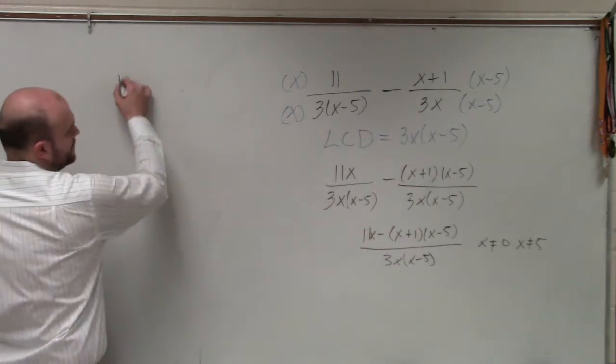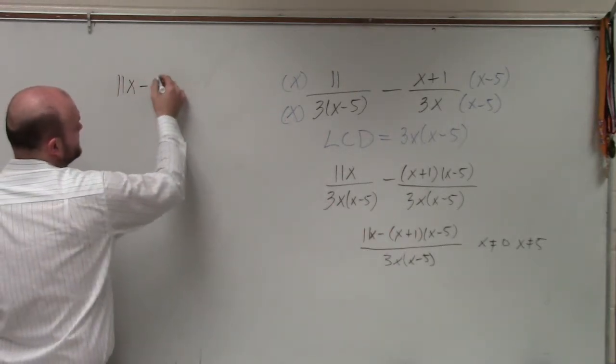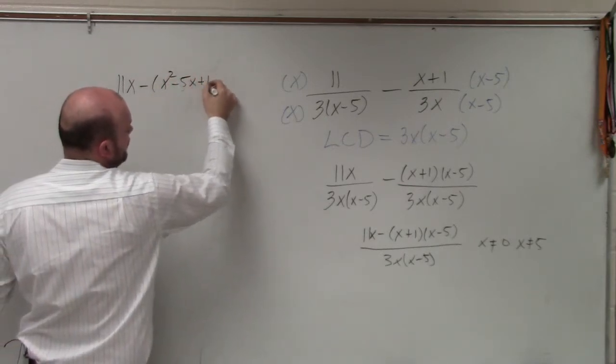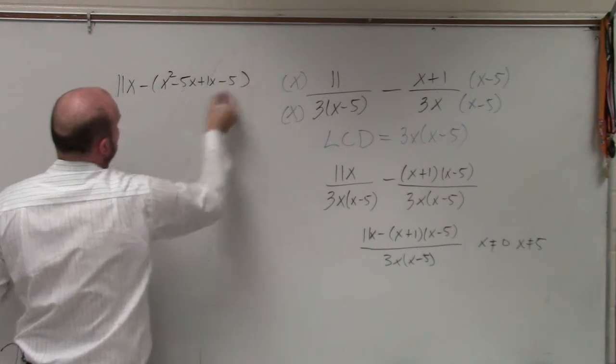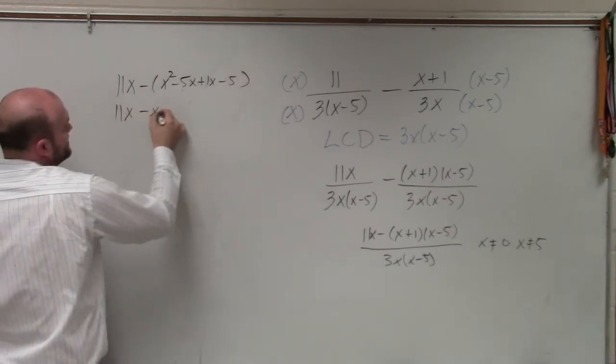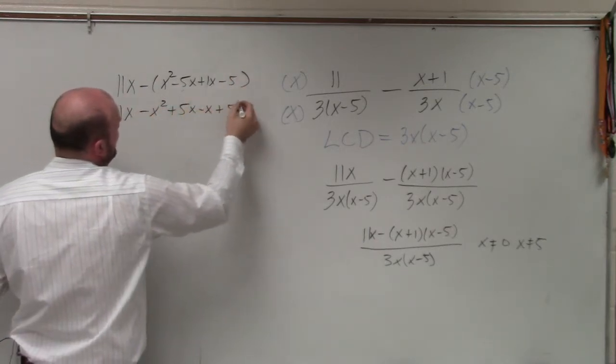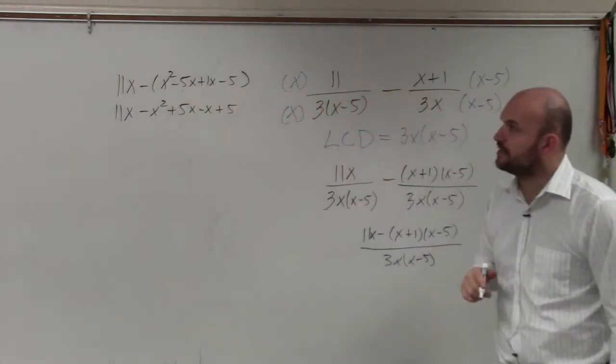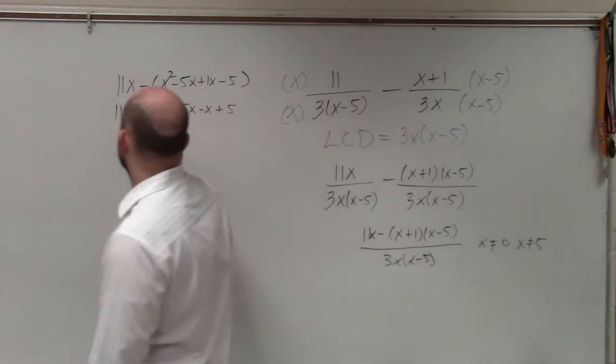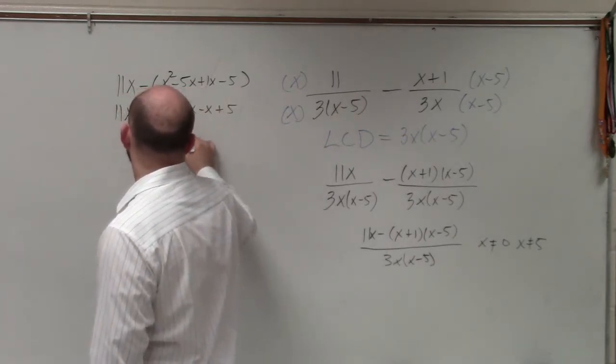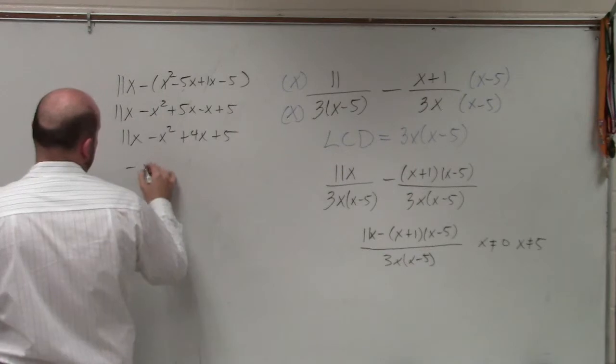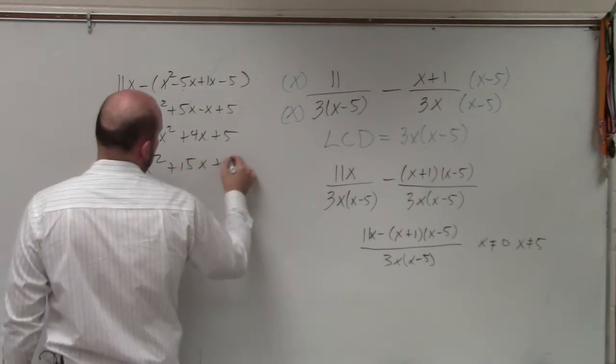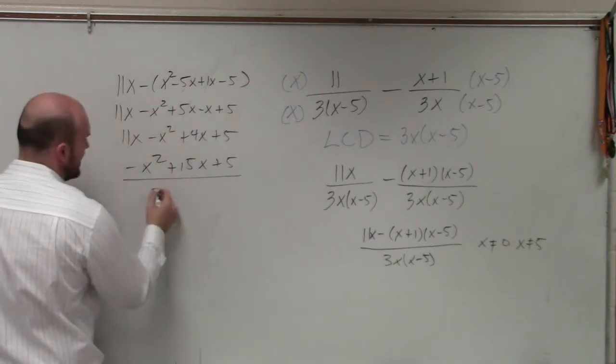So let me just go ahead and simplify this here real quick. So I have 11x minus, let's see, x squared minus 5x plus 1x minus 5. 11x minus x squared plus 5x minus x plus 5. If you guys see, what I did is I distributed the negative 1 as I combined them. So I get 11x minus x squared plus 4x plus 5. The final answer is negative x squared plus 15x plus 5 on a test.